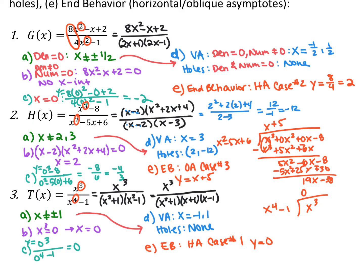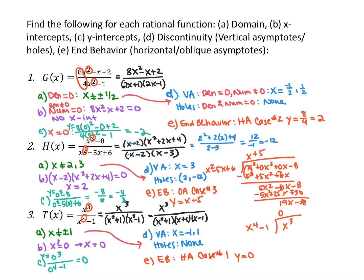To summarize finding all pieces of a rational function: domain is whatever makes the denominator equal to 0—you're not allowed to have those values. x-intercepts are what make the numerator 0, but not also the denominator. y-intercepts: set x equal to 0 and simplify. Discontinuity includes vertical asymptotes (denominator equals 0 but not numerator) and holes (both numerator and denominator equal 0). Any domain issue must be one of the two but not both. End behavior: if degrees are equal or numerator's degree is one less, you have horizontal asymptotes. If degree of numerator is one more, do polynomial long division—the quotient is your slant or oblique asymptote.